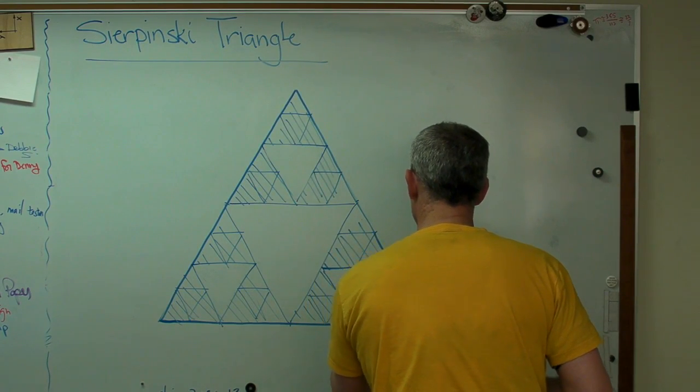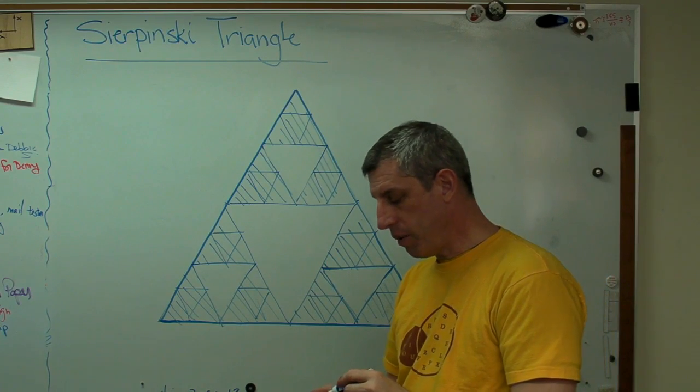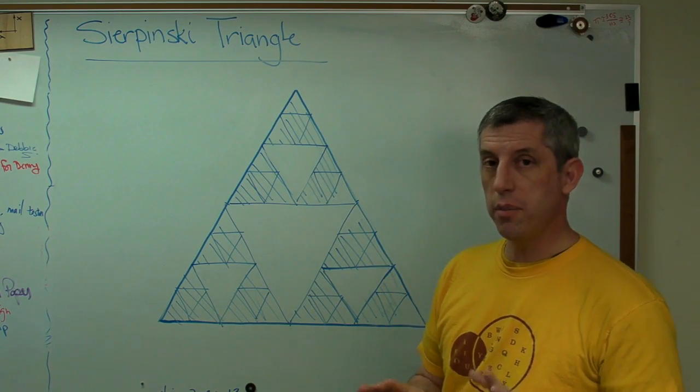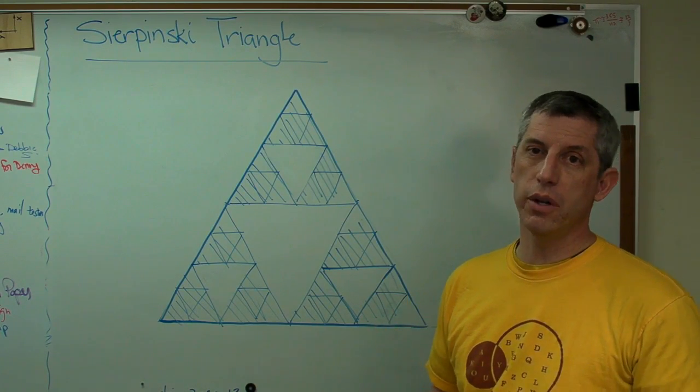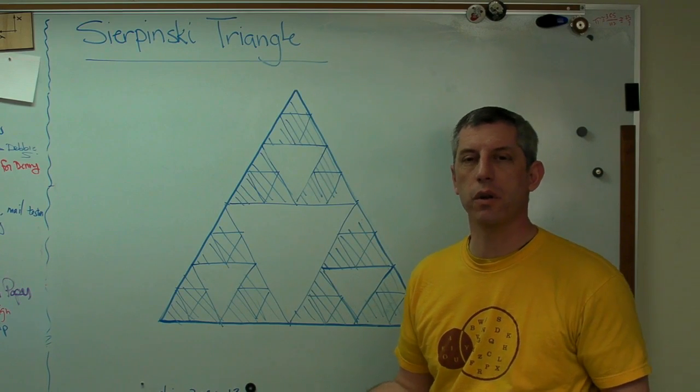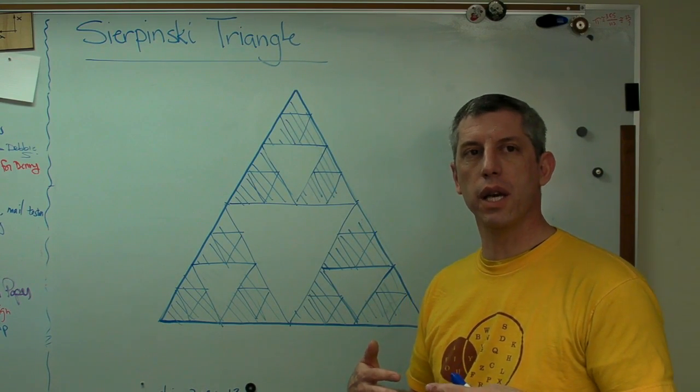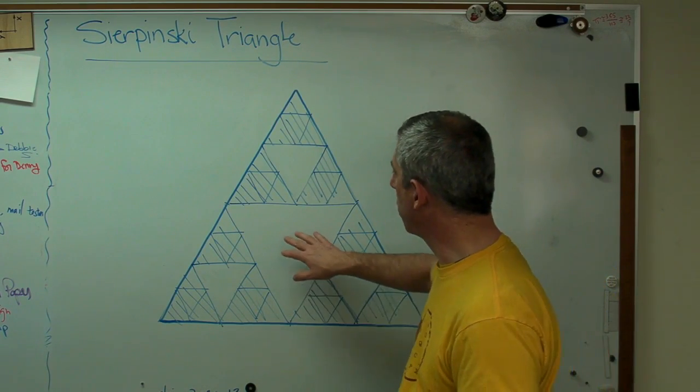Now, and in theory, I could go to infinity. Now, I want to make sure you understand, infinity is not a big number. Infinity is a concept, right? There is no such number as infinity. Whatever number you make up, I can always add one to it and make one bigger. So there's no such thing as a number that's infinity. It's a concept. That's pretty subtle, but it's important.